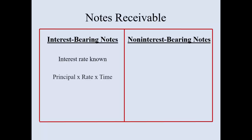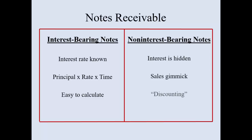With an interest-bearing note, the interest rate is known. It's principal times rate times time and it's very easy to calculate. With a non-interest bearing note, the interest is hidden — it's discounted. That's another area where we use the term discount. You need to calculate the hidden interest because your journal entry to record this will be different.